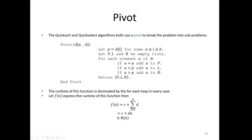Just to refresh from an earlier video: we already looked at the pivot operation and concluded that it was theta of n, a linear time operation. We're going to make use of this pivot operation again. The pivot operation splits our list into three sets: the set of elements equal to our pivot, the set of elements less than our pivot, and the set of elements greater than our pivot.